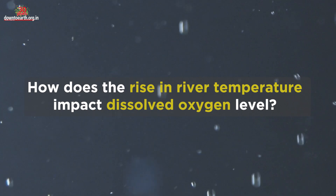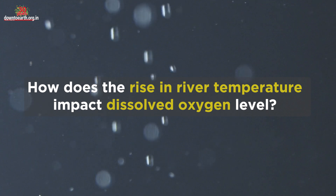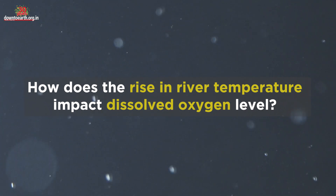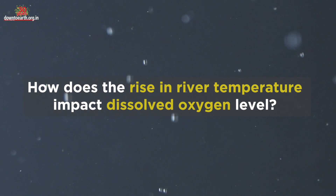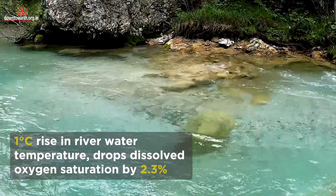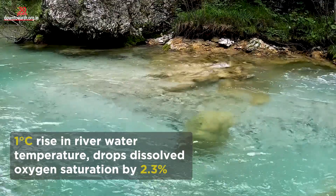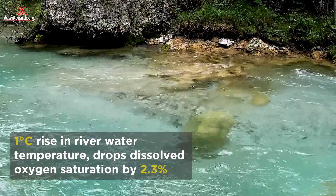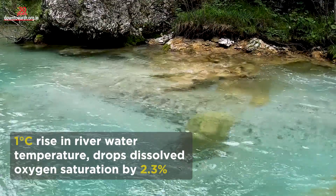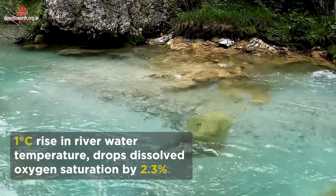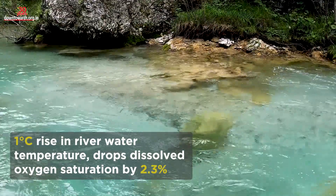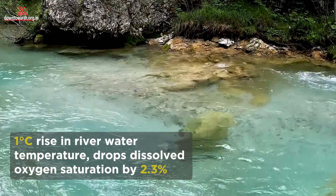How does the rise in river temperature impact dissolved oxygen levels? Oxygen becomes less soluble with warmer water. For every 1 degree Celsius rise in river water temperature, dissolved oxygen saturation goes down by 2.3 percent.